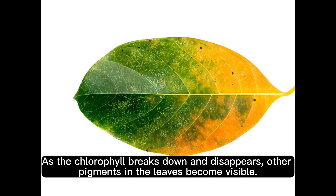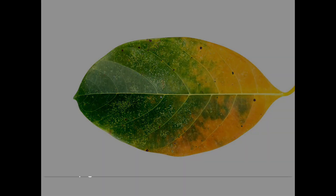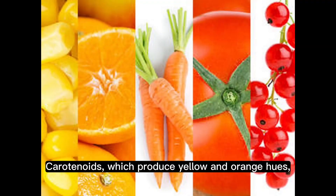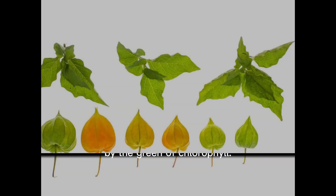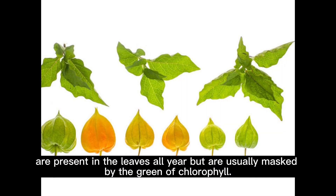As the chlorophyll breaks down and disappears, other pigments in the leaves become visible. Carotenoids, which produce yellow and orange hues, are present in the leaves all year, but are usually masked by the green of chlorophyll.